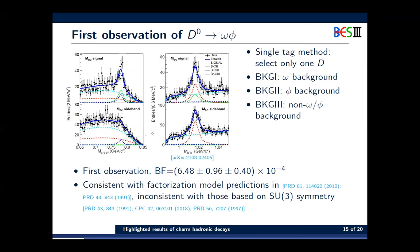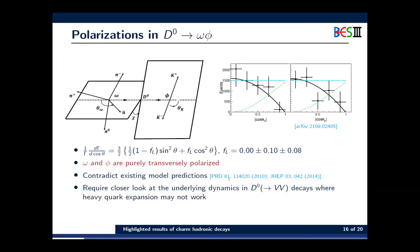We also reported the first observation of D0 to omega phi, measuring the branching fraction of this decay. It is consistent with some model predictions but inconsistent with others, so it serves as a very good channel to test various theoretical tools. We also measured the polarization in this decay and found that the omega and phi are purely transversely polarized, which is different from the model predictions and certainly requires a closer look at the underlying dynamics in this decay and other D0 decays into two vectors.